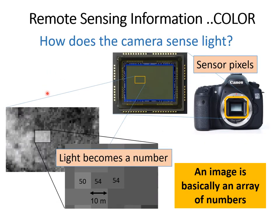To understand what an image is: basically an image is an array of numbers. When light gets into the lens of a camera, it goes into an array of pixels that are sensitive to light, and each pixel reacts producing a signal. This signal is measured and converted to a number, so each pixel is basically a number, but it is visualized on the monitor as a color or as a grayscale. This is very interesting because we can manipulate these colors in order to analyze the images — this is essentially what we do in image processing.